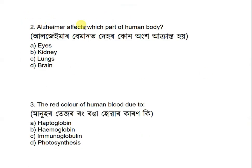The next question asks about the chemical effect on the human body. Options include: eyes, kidney, lungs, and brain. The correct answer is brain — this chemical affects the brain of the human body.